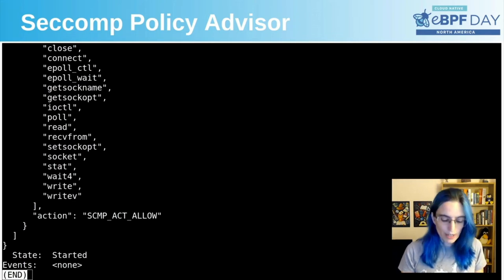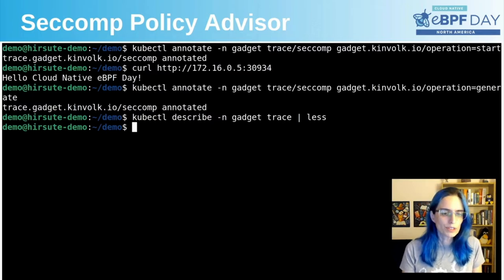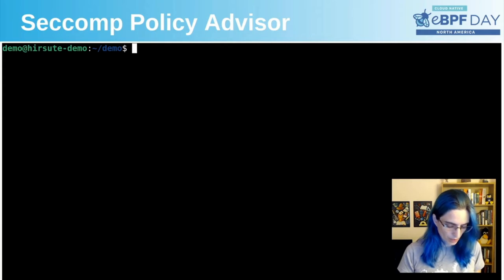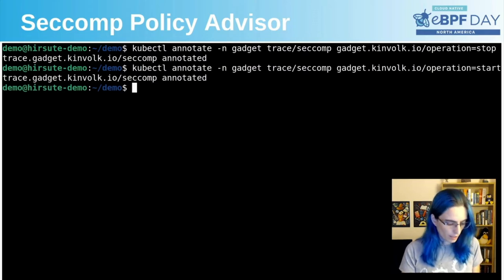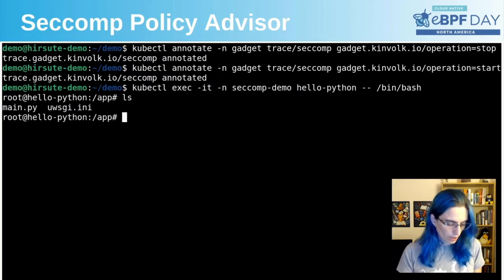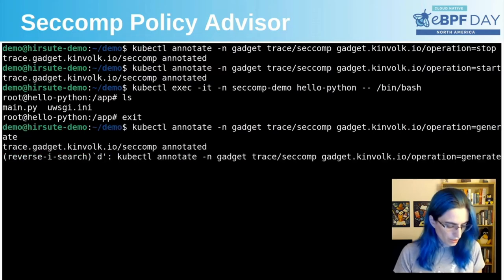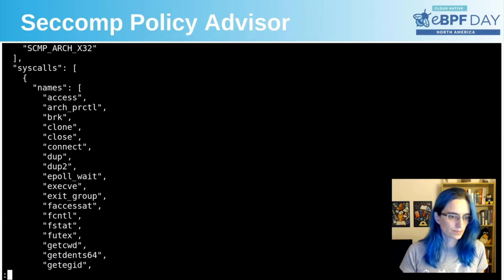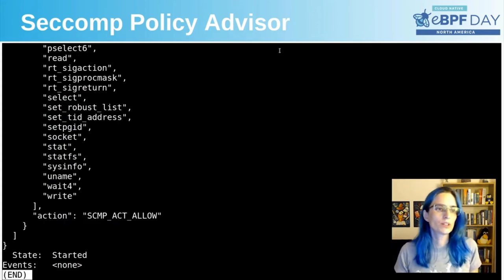Let's look at the policy that we would generate for a different action. What happens, for example, if I try to execute the bash command inside the container? To do that, we need to first stop the current trace and start a new one. So let's do stop and start. And now we will exec bash and list the files. Now we can call generate again and look at the status. We see quite a few more syscalls — these were the syscalls needed to execute bash and then run ls inside that bash.